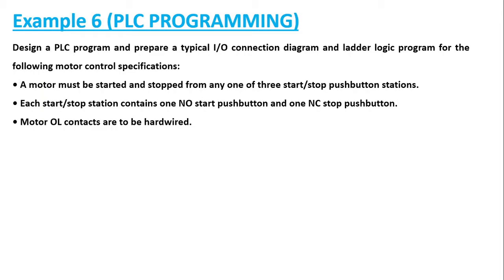So how do we draw the ladder diagram for this? If you carefully observe, there is one motor to be connected to three different stations through push button switches, and there are start and stop push buttons in each station — that means two push button switches per station. I would suggest you pause this video and try this problem on your own; if you don't get it, you can continue watching to get a clear understanding.